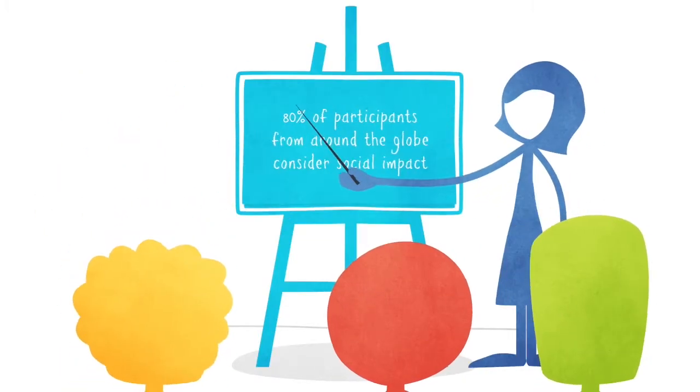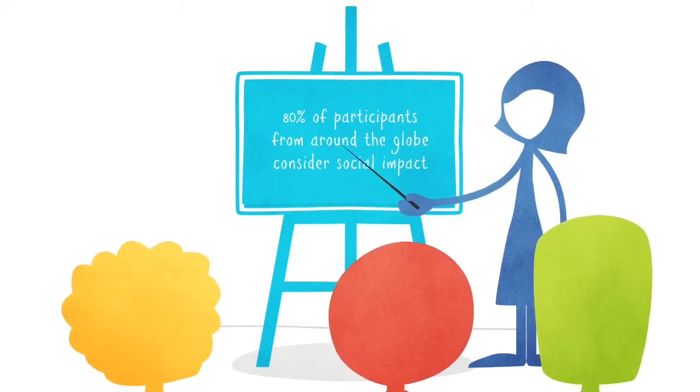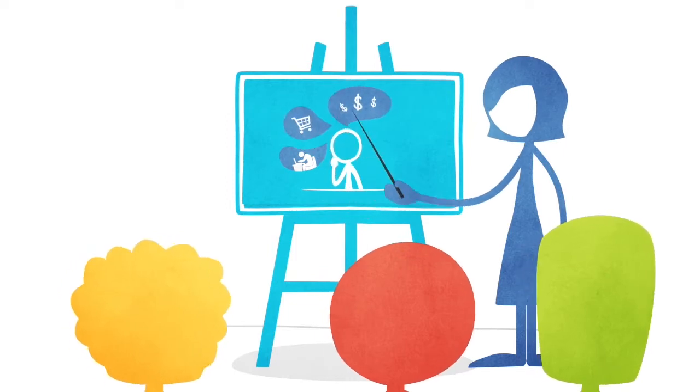In a recent study, 80% of people said that they do in fact consider social and environmental issues when deciding where to work, where to shop, what to buy, and what to recommend.